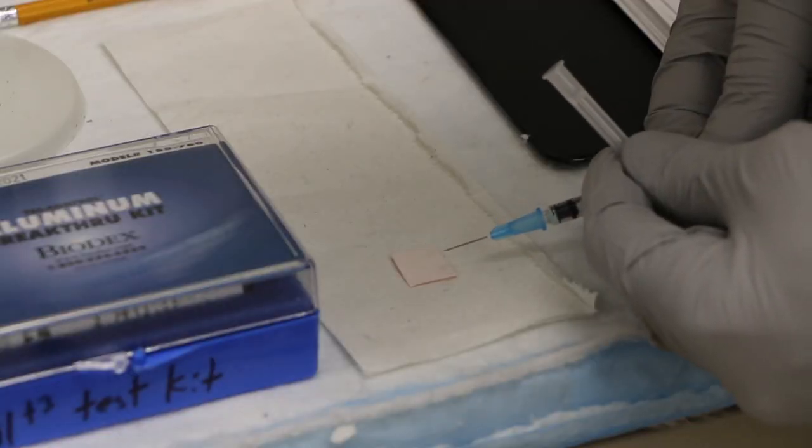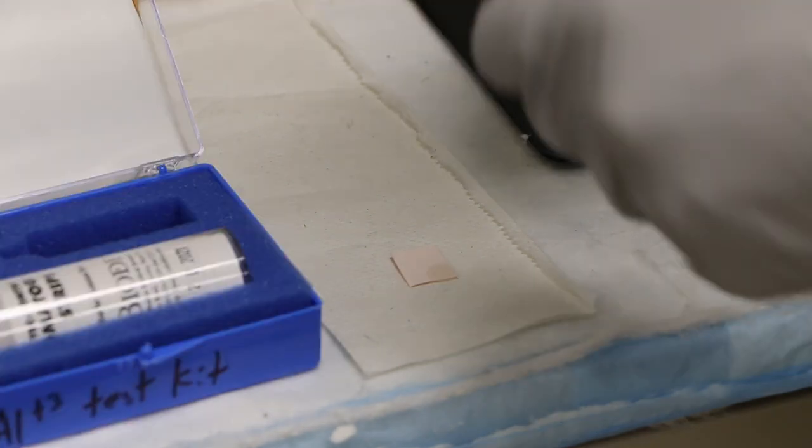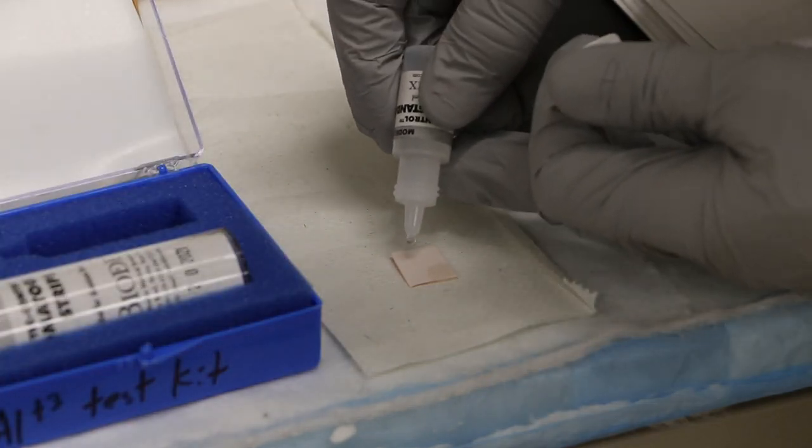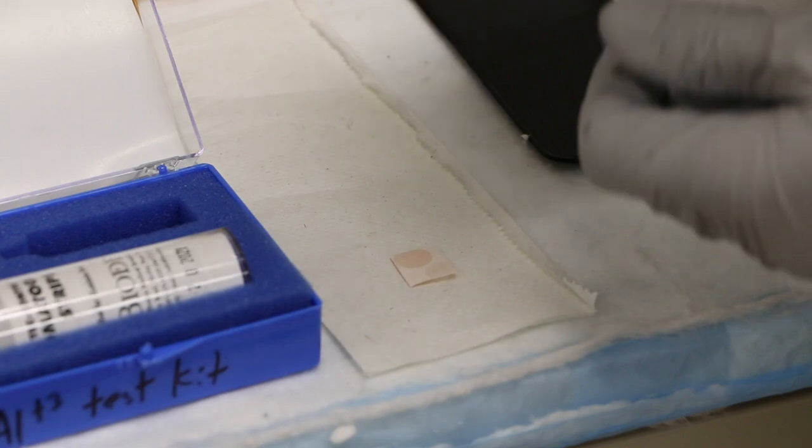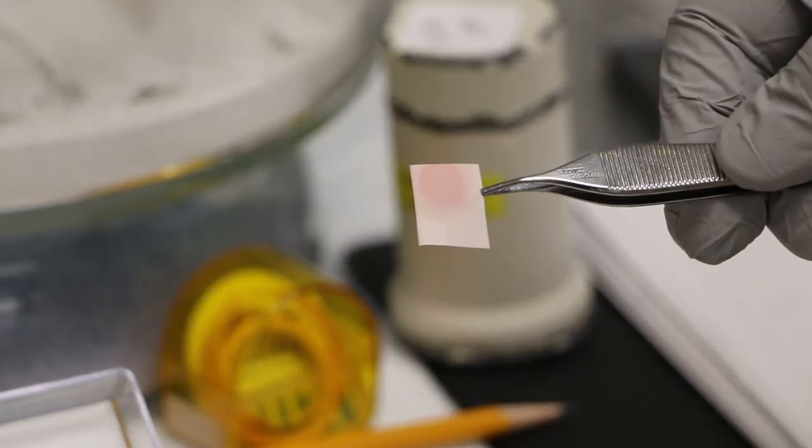Using the aluminum breakthrough kit provided by the manufacturer, place one drop of the eluate on the corner of the chromatography strip and one drop from the aluminum standard on the other corner, and look for a color difference. If the standard should appear much lighter than the technetium, then there is excess aluminum in the eluate.